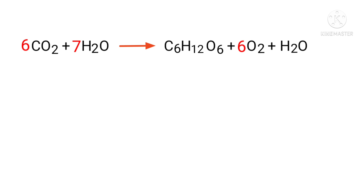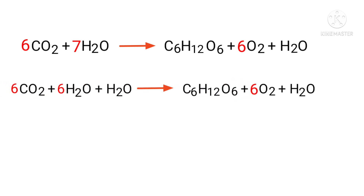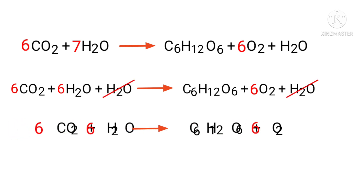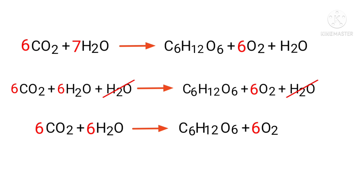Now we can simplify this equation as 6CO₂ plus 6H₂O plus H₂O, which gives us C₆H₁₂O₆ plus 6O₂ plus H₂O. Now we can cancel the same terms, and this is the final balanced equation.